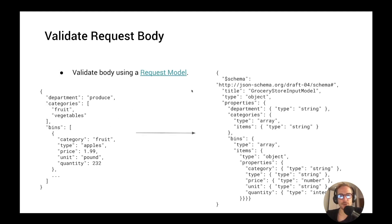You can do the same thing with the request body of your API. This is a more complex validation because the body is a JSON file, and in this case you need a request model. A request model is just a JSON schema document that you put on your API Gateway. This is an example from the AWS documentation showing a JSON body of an API — a department object with properties like department, which is a string, categories, which is an array of strings, and bins. The associated schema specifies the type for each property: department is string, categories is type array with items as strings, and the bins array has properties like price as a number, and so on.